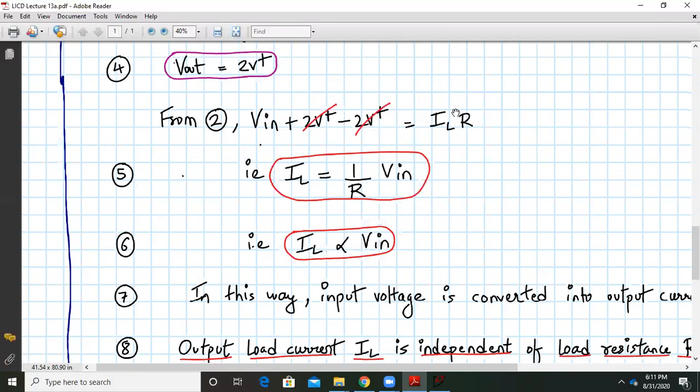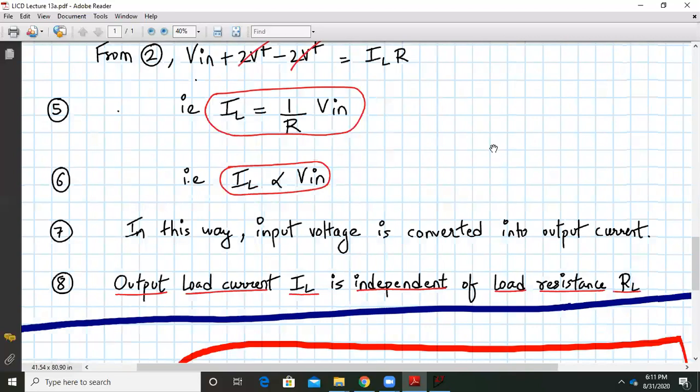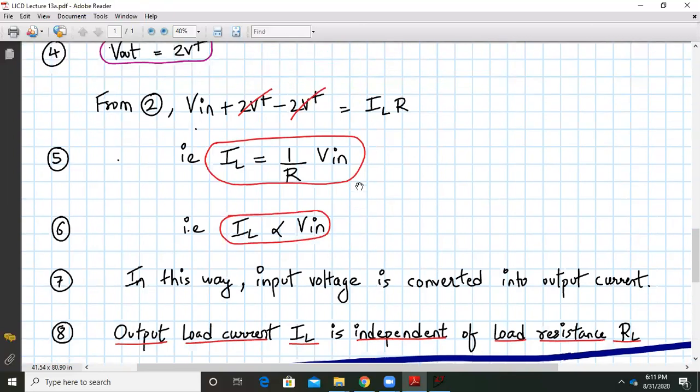We know that the resistor is normally a constant at a fixed value. We can say that the load current IL is proportional to the input voltage V in. In this way, we have converted the input voltage into an output current. Remember one more thing that the output load current IL is independent of the load resistance RL. That is the biggest feature of this grounded load V to I converter.